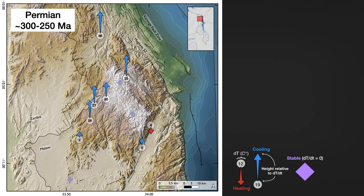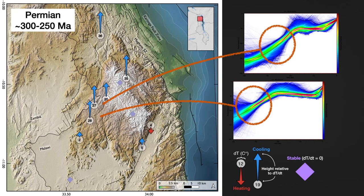In the Permian, most samples show cooling, but it seems to be primarily confined to Nyika's western half. This could be related to Karoo rifting in the failed rift just to the west of the area in Zambia, or it could be related to that western bounding fault — some reactivation in Karoo times.